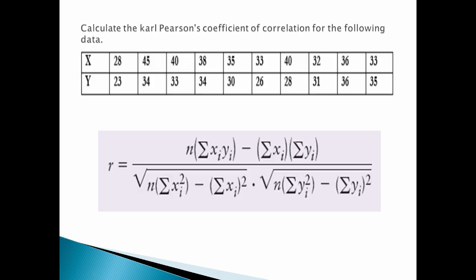Now we will show you the example. Calculate Pearson's coefficient of correlation for the following data. We need one set of data points with columns xi, yi, xi squared, and yi squared.